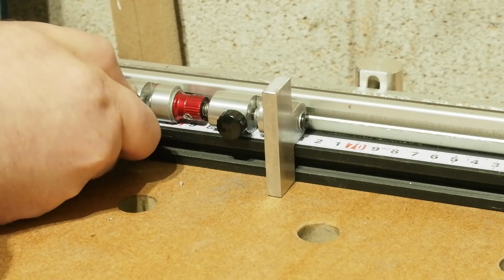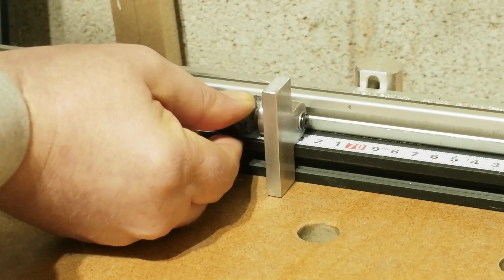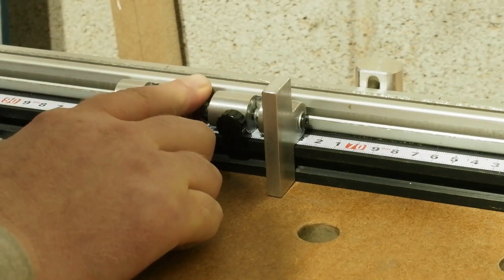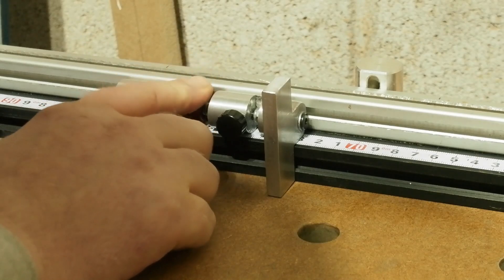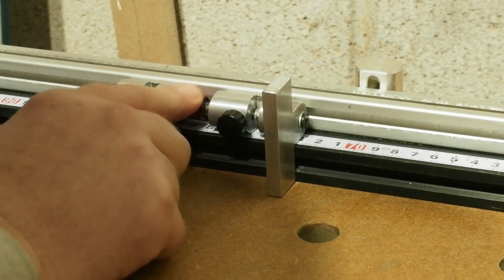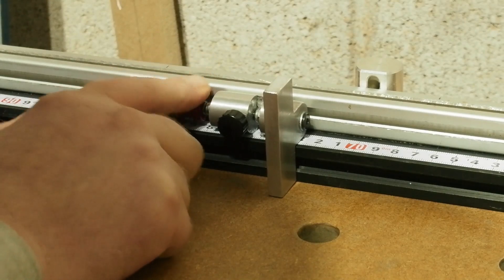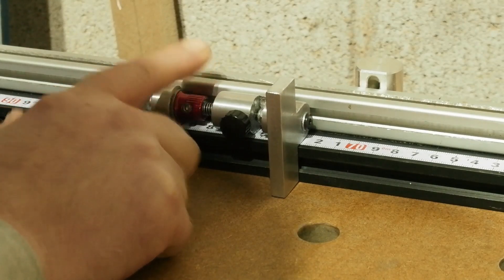For using just the micro-adjust, with the rear micro-adjust body tightened down, you loosen the front flip stop body thumb screw a little, then turn the red thumb wheel whichever way to creep up on your mark, scale or cut, then tighten back down. I'm actually really pleased with how well this works, considering I hand drilled all these holes. Obviously, to move the whole assembly, you undo both the front and rear thumb screws.